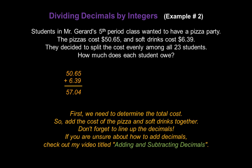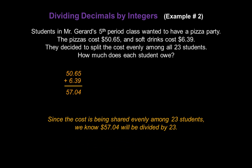Now, if you're unsure about how to add decimals, check out my video titled Adding and Subtracting Decimals. Now, since the cost is being shared evenly among 23 students, we know $57.04 will be divided by 23. So let's set up that division problem: 57.04 divided by 23.